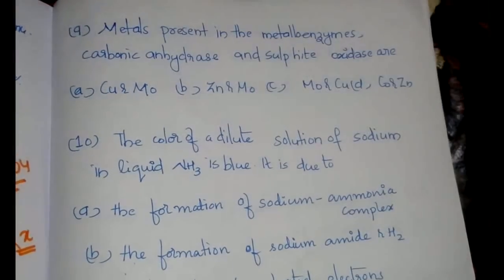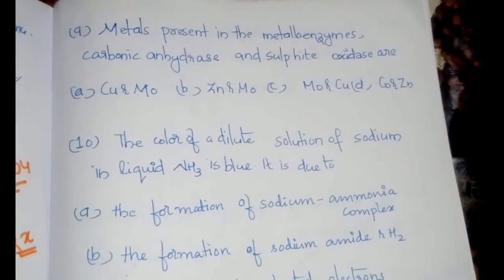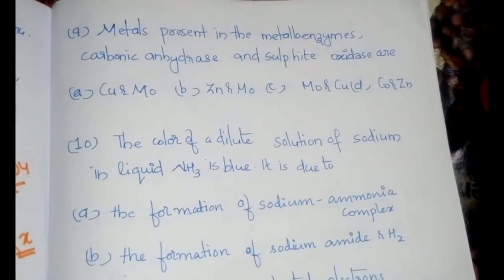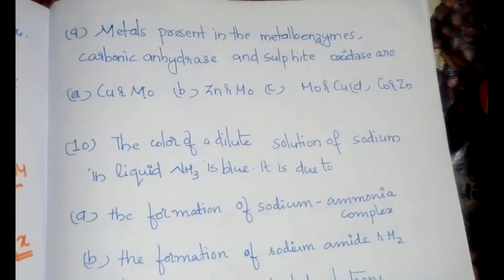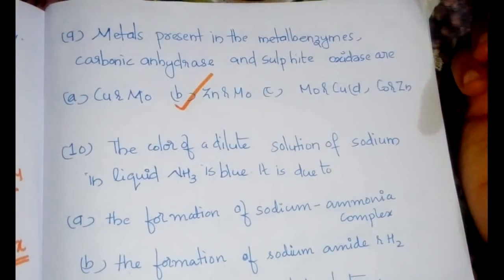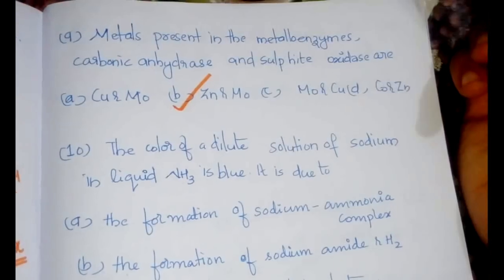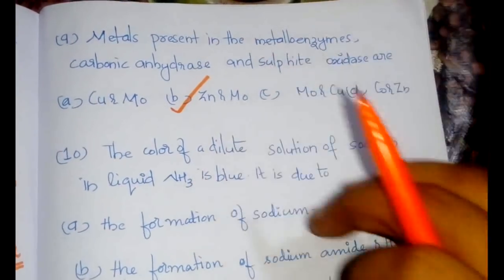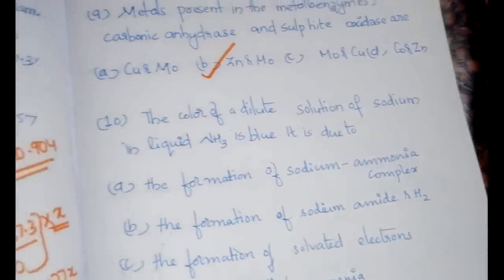Next question from biomolecules: the metals present in the metalloenzyme carbonic anhydrase and sulfite oxidase are. Answer is option B: zinc and molybdenum. Carbonic anhydrase consists of zinc and sulfite oxidase contains molybdenum.